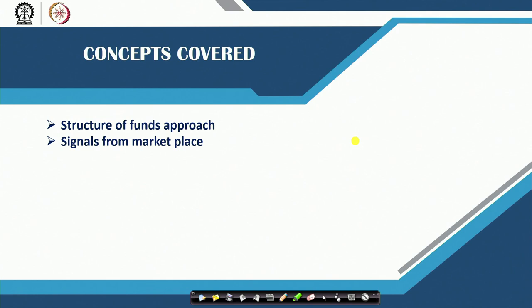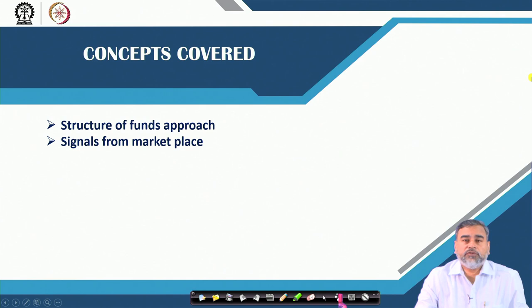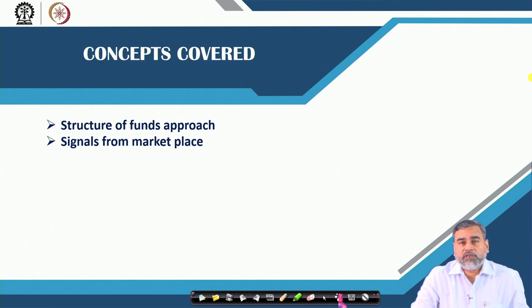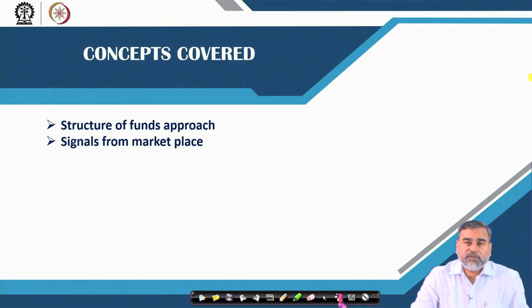In today's session we will be discussing the structure of the funds approach and the signals from the marketplace. The structure of the fund means we are talking about the different liquid funds available with commercial banks — how much liquidity commercial banks need, how much cash or liquid assets they should keep to fulfill the requirements of different stakeholders. We also have certain indicators in the marketplace which give an idea of the liquidity condition of a particular commercial bank at a given point in time.